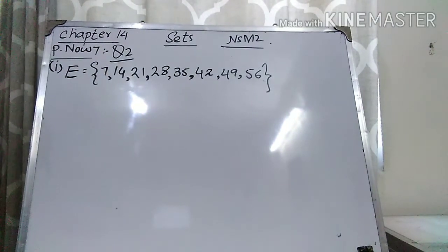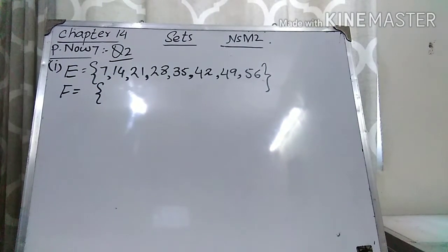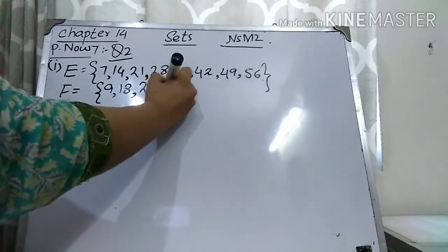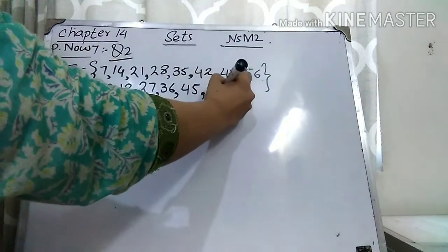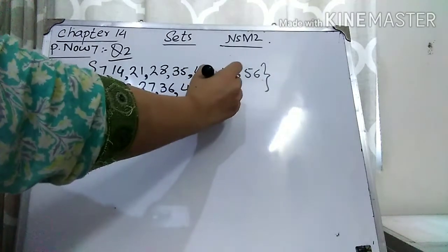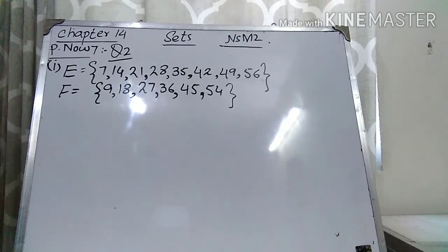Now write down the multiples of 9 for F. Multiples of 9: 9, 18, 27, 36, 45, 54 — stop here because 9 × 7 = 63 is not included. So the elements of E are {7, 14, 21, 28, 35, 42, 49, 56} and the elements of F are {9, 18, 27, 36, 45, 54}.